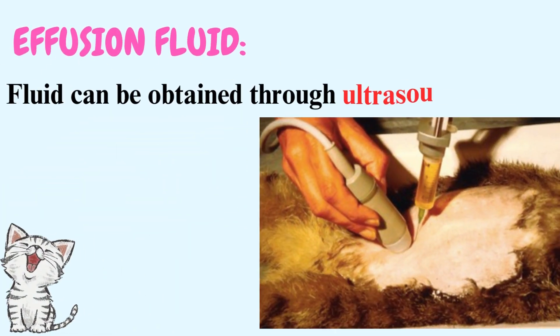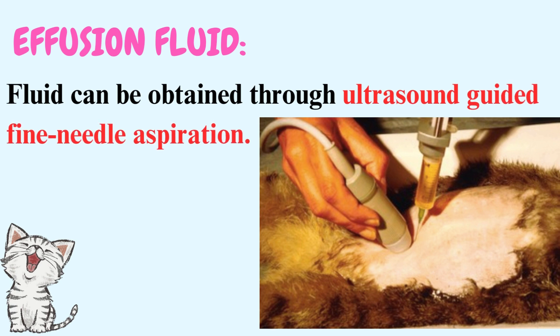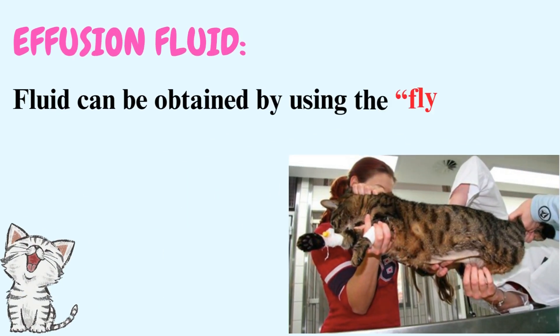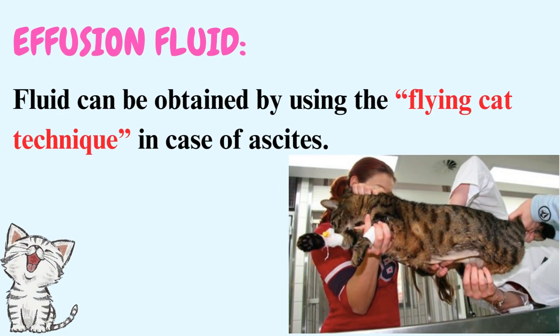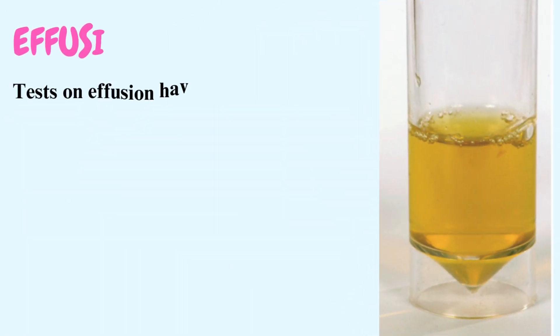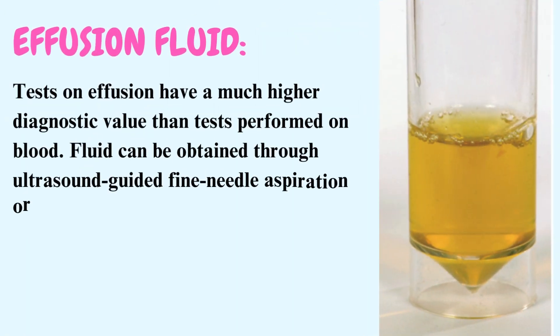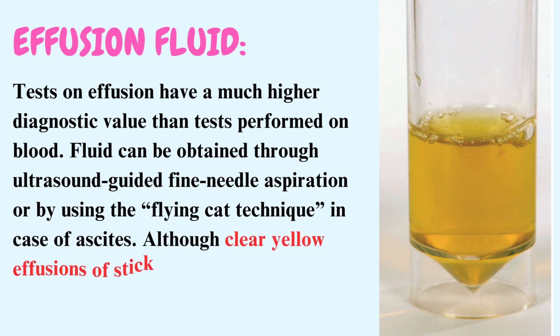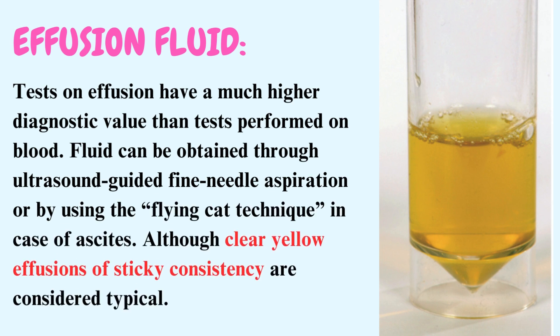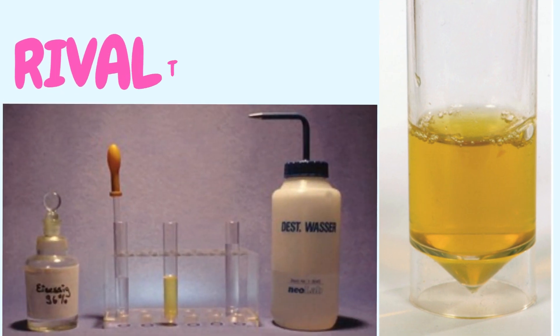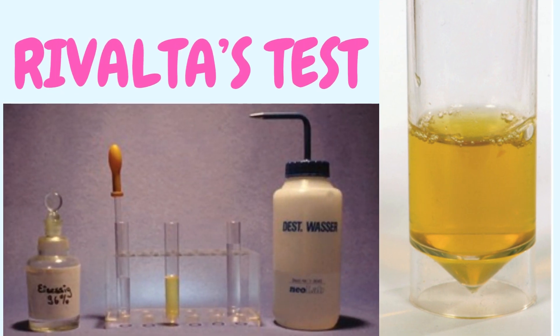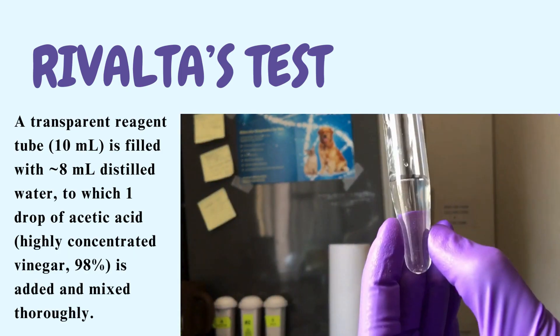Effusion: Tests on effusion have a much higher diagnostic value than tests performed on blood. Fluid can be obtained through ultrasound-guided fine needle aspiration or by using the flying cat technique in cases of ascites, although clear yellow effusions of sticky consistency are considered typical. Rivolta's test is a simple, inexpensive method that does not require special laboratory equipment and can be performed easily in private practice.